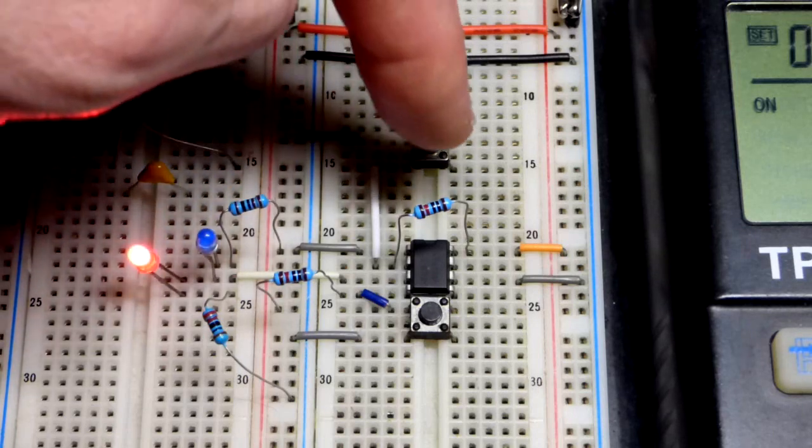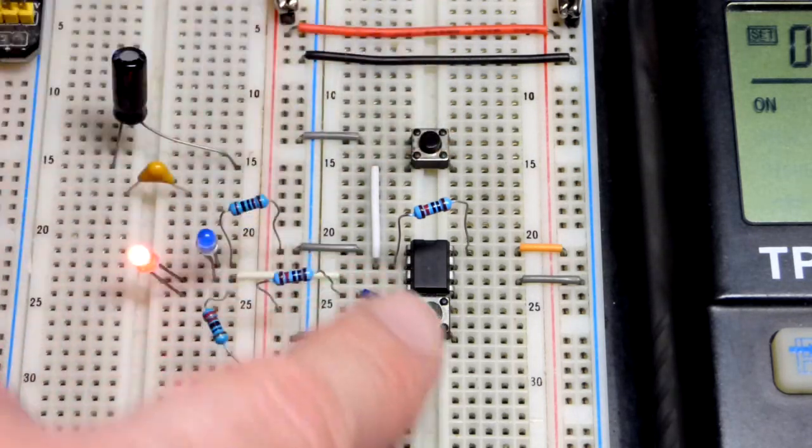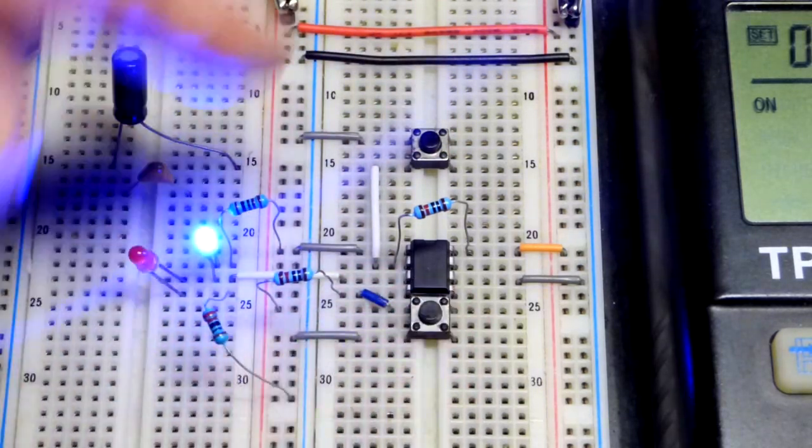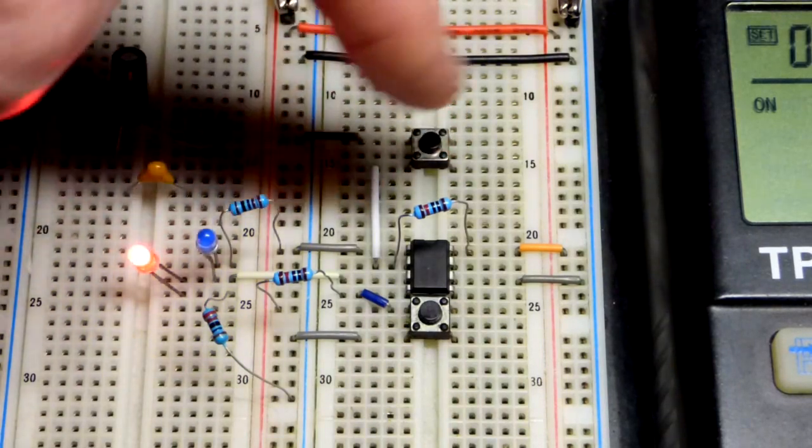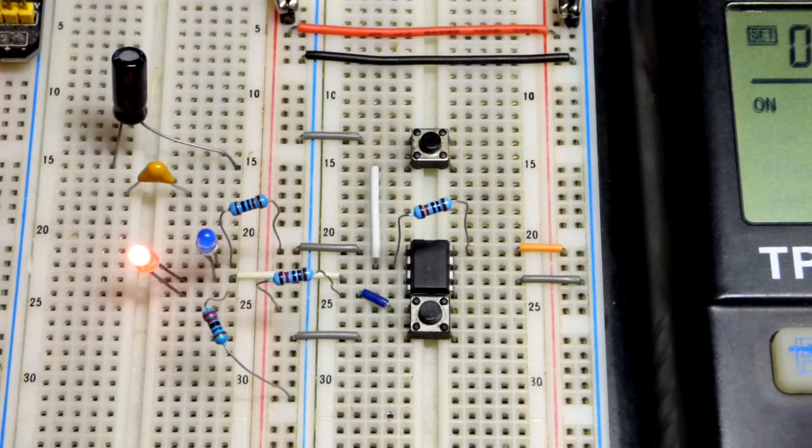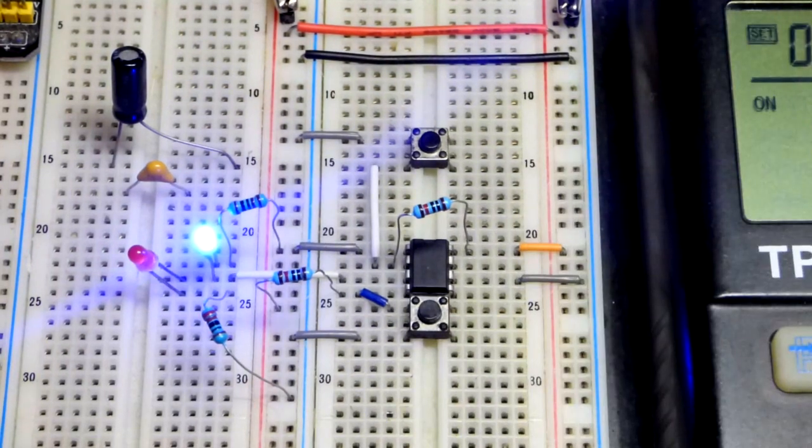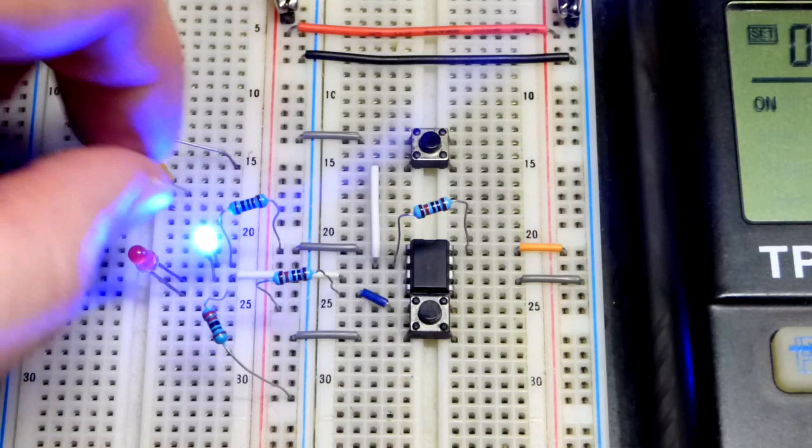We have the 555 timer here in bi-stable mode. Pressing that one sets the output high, that one sets the output low. It alternates which LED turns on. So we have the output high now. The red LED should stay lit, but if I bump the power supply, it's really easy to set it low.